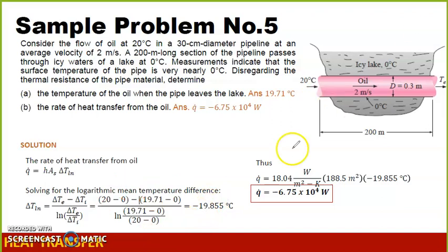So this is the temperature, the average temperature of the pipe. Thus we can solve for Q by substituting the values. This is negative because as you can see, the pipe is actually losing heat because of this icy condition. So this is our rate of heat transfer.